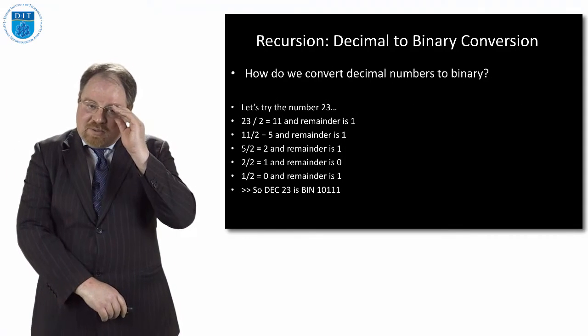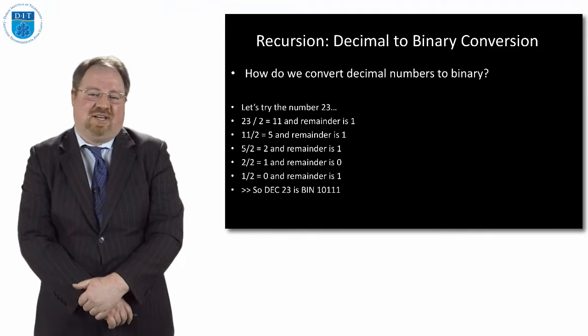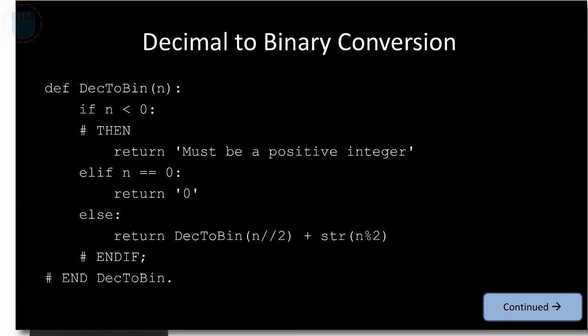For converting decimals to binary, all we do is continuously divide a number by 2 and look at the remainders — that gives us the binary string for that value. To do this recursively, we create a method def dec_to_bin that takes in a number. If the number is less than zero, we say it has to be a positive number. If it's zero, we return the string '0'. Otherwise, we return dec_to_bin of the whole-number division by 2, concatenated with the string of the remainder when we divide by 2. The main program just asks for a value and prints out dec_to_bin of that value.